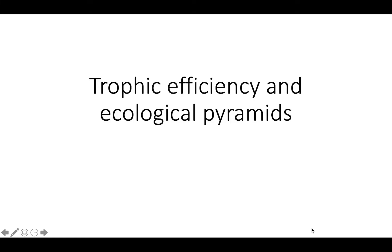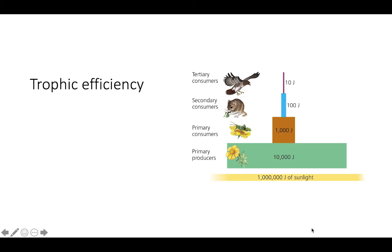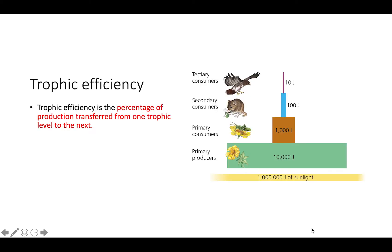This video is going to be about trophic efficiency and ecological pyramids. Trophic efficiency is the percentage of production that's transferred from one trophic level to the next.